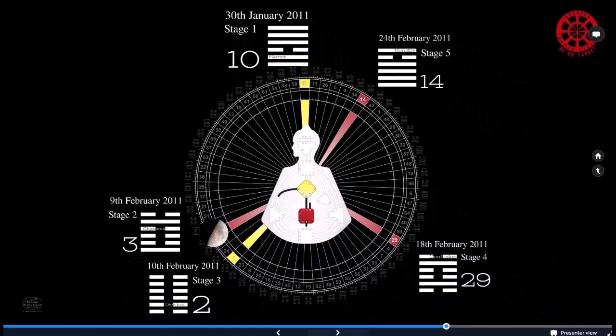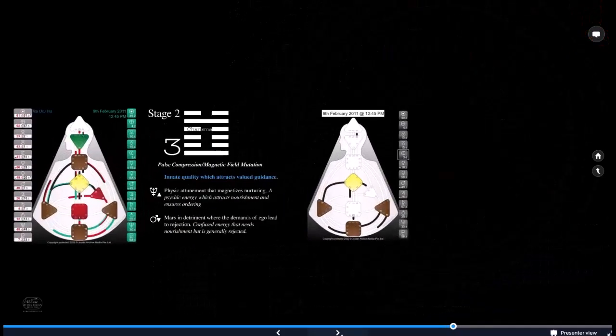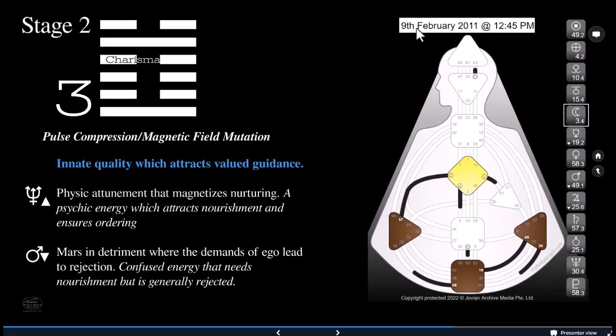So then we move to the three. The third gate is dealing with beginnings, dealing with the life force, dealing with mutation. Yeah, it's difficulty at the beginning. So if we move to when that happened, 9th of February, 2011 at 12:45. Here we have the third gate, pulse compression, and magnetic field mutation. Fourth line is called charisma. We're learning about the innate quality, which attracts valued guidance. Neptune exalts. Psychic attunement that magnetizes nurturing. A psychic energy, which attracts nourishment and ensures ordering. Mars in detriment, where the demands of the ego lead to rejection. Confused energy that needs nourishment, but is generally rejected.